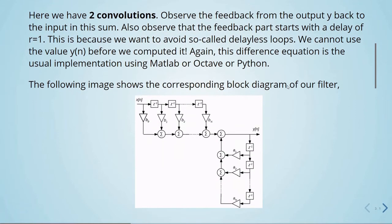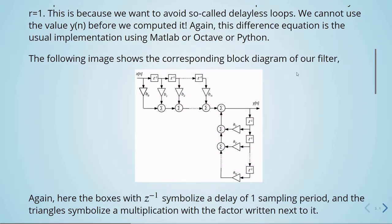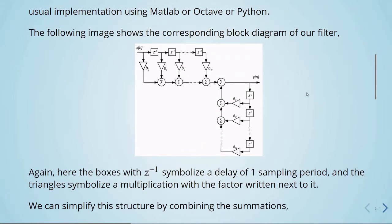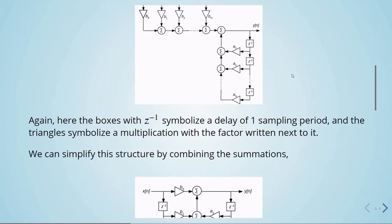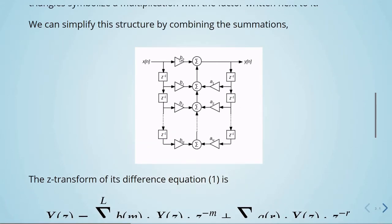This picture shows the corresponding block diagram of our IIR filter. We have our input, delay blocks, multiplications, additions, and the output. We also use delayed versions of the outputs as feedback. The boxes with z to the power of minus one symbolize a delay of one sampling period, and the triangles symbolize a multiplication with the factor written next to them. We can simplify this structure by combining the summations, and we end up with this block diagram.